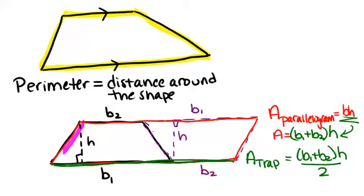So again, if we take two trapezoids, we make a parallelogram. So the area of a trapezoid is half the area of a parallelogram.